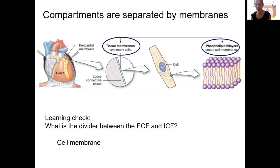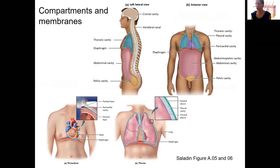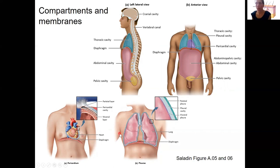Know those abbreviations — ECF and ICF. Now let's talk about the types of membranes. There are various body cavities: the cranial, vertebral, thoracic, abdominal, and pelvic cavities. Within the thoracic cavity there's also the pericardial cavity and the pleural cavity. What makes these be separate compartments is the membranes that surround them.